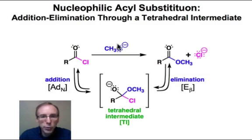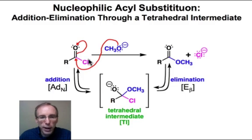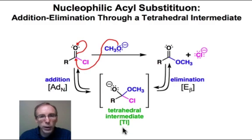The mechanism begins with the ADn step in which the nucleophile attacks the carbonyl carbon, the polarized π bond of the carbonyl group. The ADn step generates an oxyanion intermediate, and the carbonyl carbon is transformed into an sp3 carbon — the tetrahedral geometry — which is why we call it the tetrahedral intermediate.